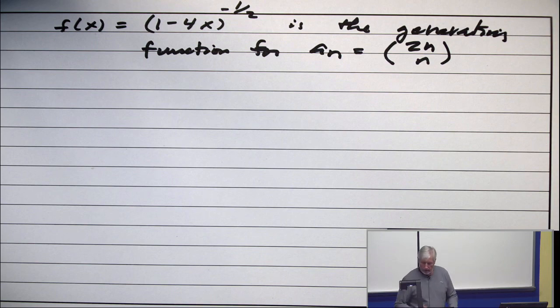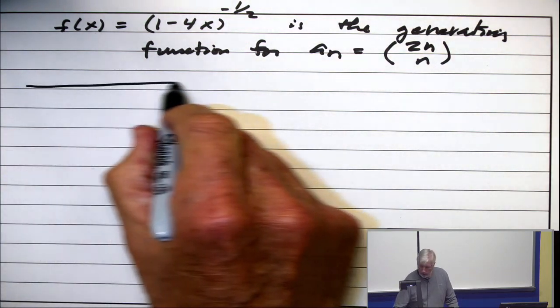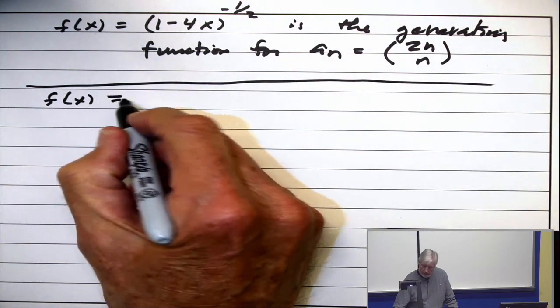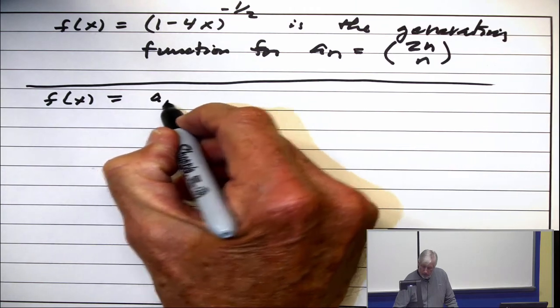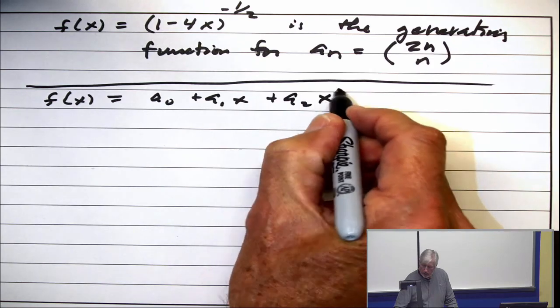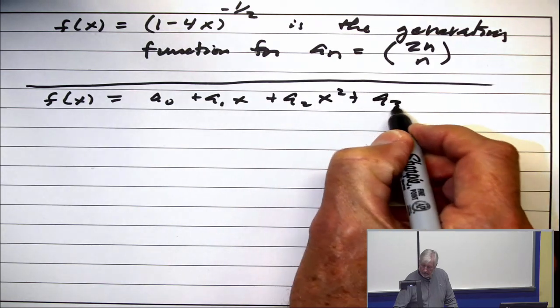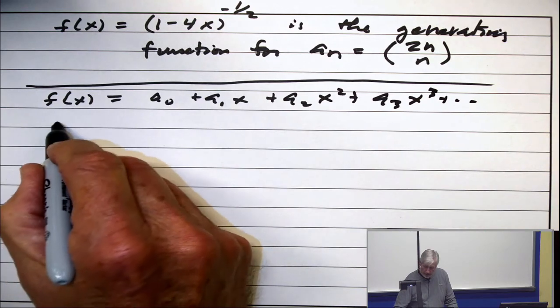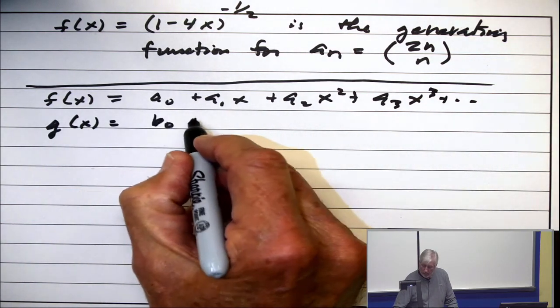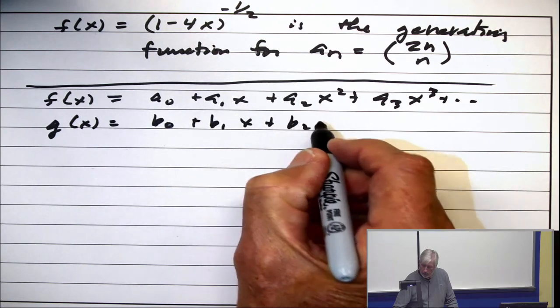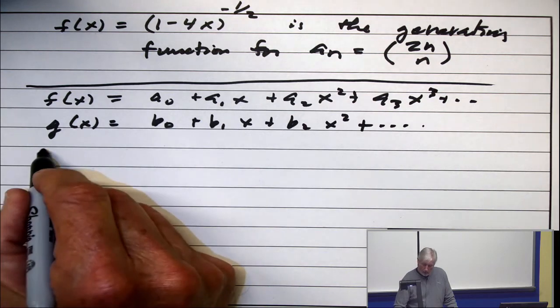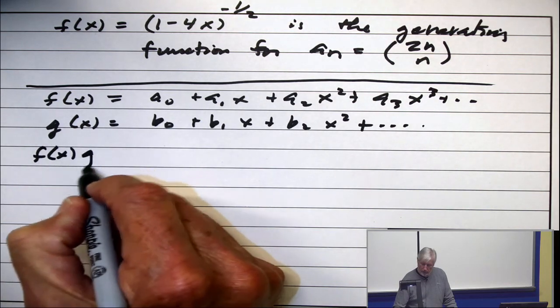Okay, now, question. If I have one generating function, f of x is a0 plus a1x plus a2x squared plus a3x cubed, etc. And I have another function, g of x, and it's b0 plus b1x plus b2x squared and so on. What's this function look like, f of x times g of x?